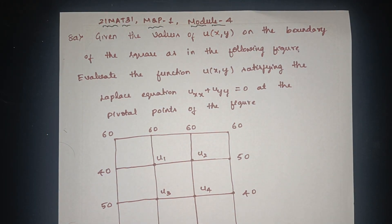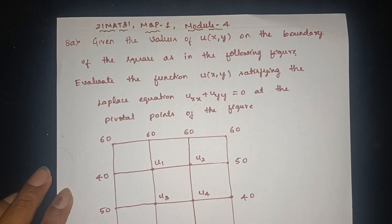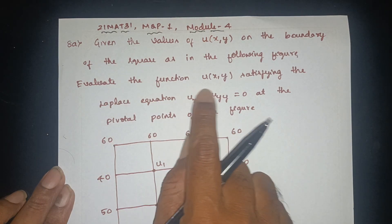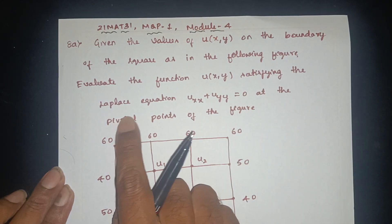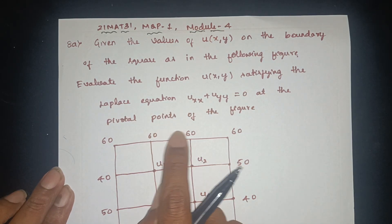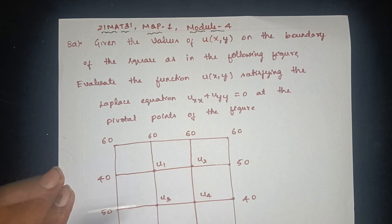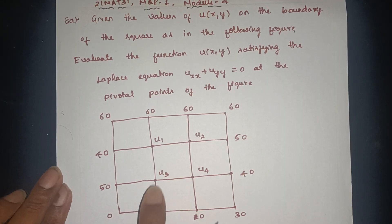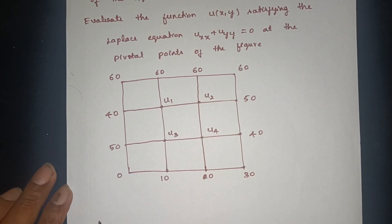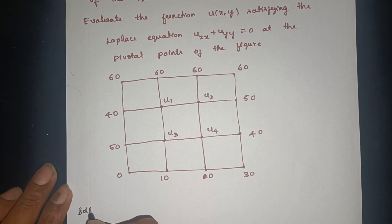Given the values of u, u(x, y), and the boundary of the square as in the following figure, evaluate the function u(x, y) satisfying the Laplace equation uxx plus uyy is equal to 0 at the pivotal points of the figure. We need to find u1, u2, u3, u4.